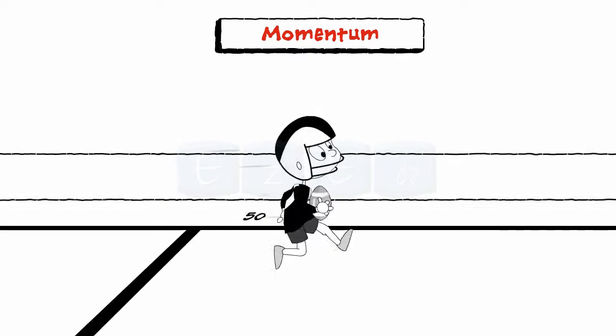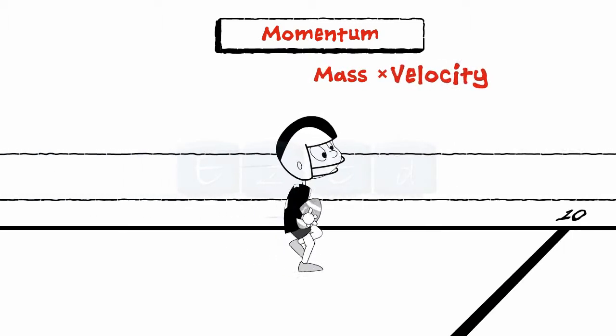As the measure of the motion of a moving body, the product of mass and velocity is called momentum.